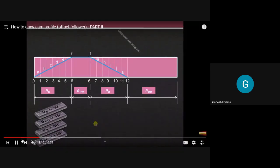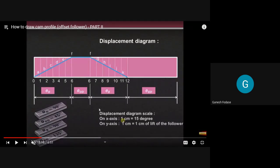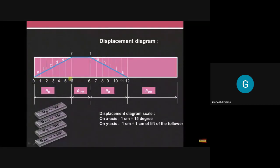Any doubt about the displacement diagram — how to draw it, regarding scale? This is your complete displacement diagram. You have to mention the scale on the sheet as well because your scale is different and shape size will change accordingly. On the Y-axis scale is 1:1, and on the X-axis one centimeter equals 15 degrees.